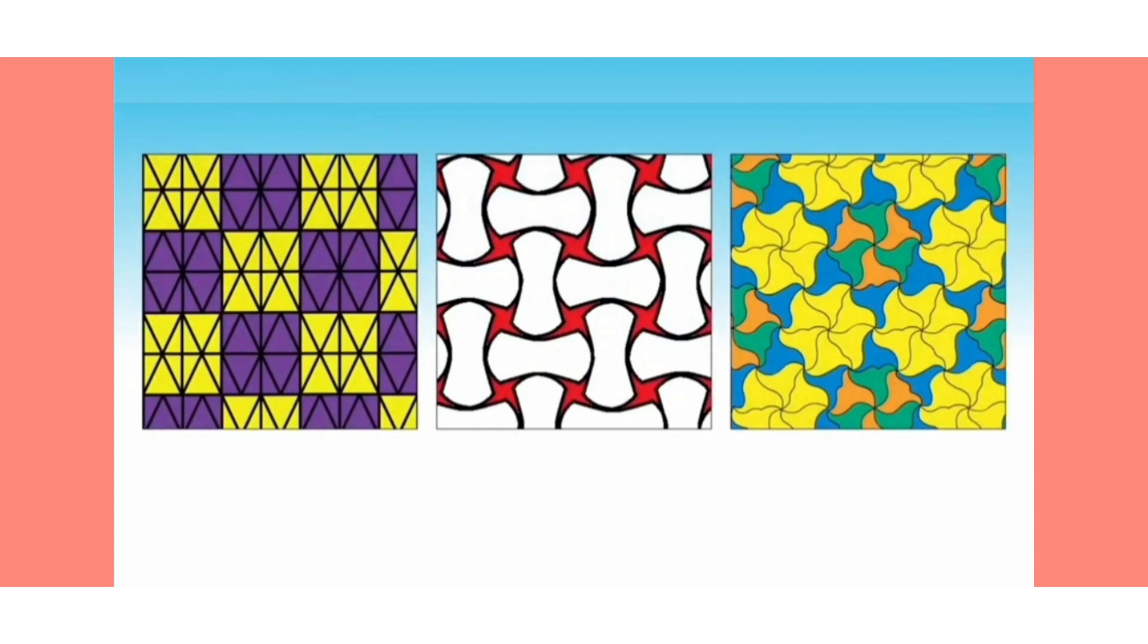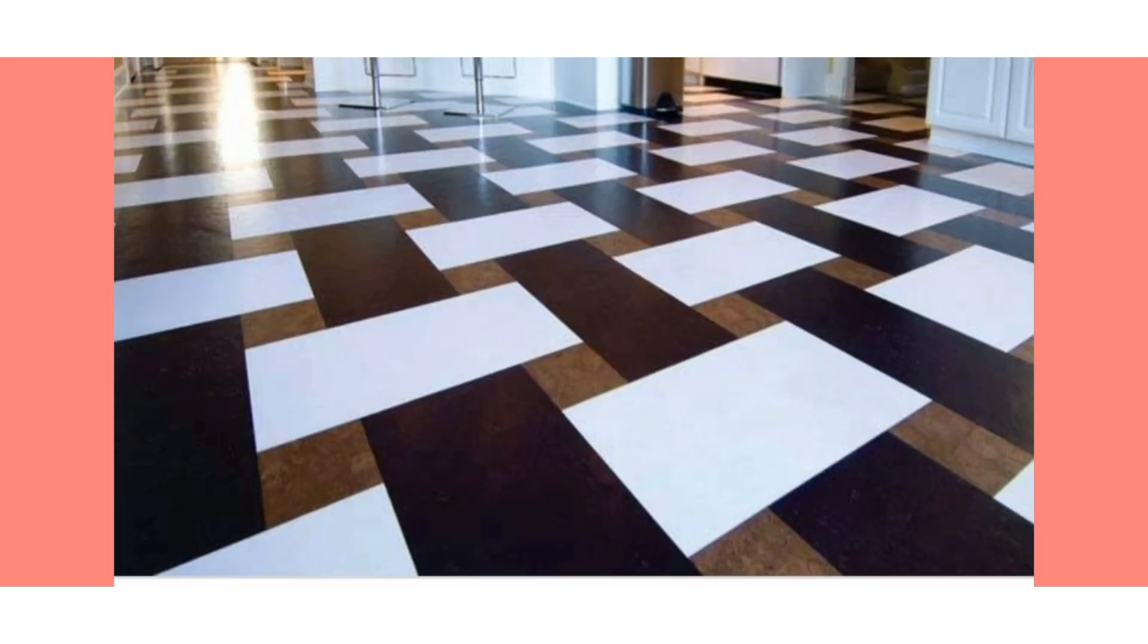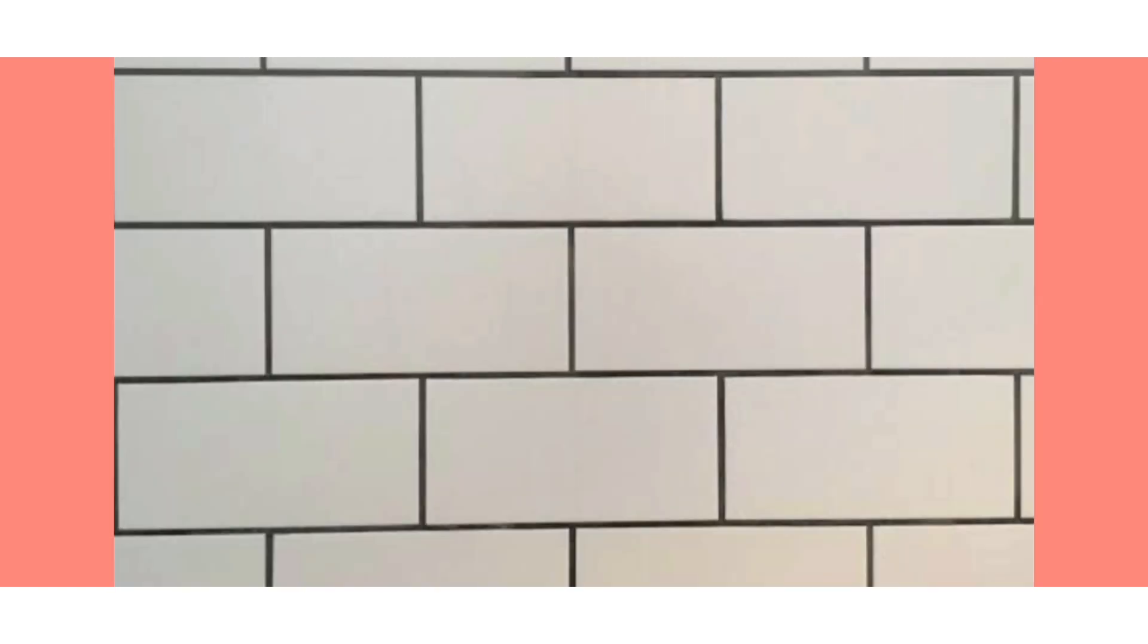Students, you might have noticed that the various tiles fixed on floors and roads follow a particular pattern and there is no gap between the tiles and no two tiles overlap each other. Dear students, when we fix similar tiles on a floor in such a way that there is no gap between the tiles nor the tiles overlap, this formation is known as tessellation.